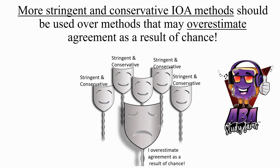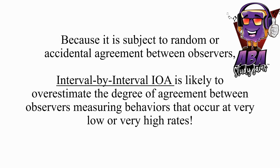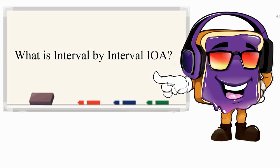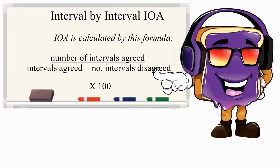Because it is subject to random or accidental agreement between observers, interval by interval IOA is likely to overestimate the degree of agreement between observers measuring behaviors that occur at very low or very high rates. According to Cooper, when using interval by interval IOA, the primary observer's record for each interval is matched to the secondary observer's record for the same interval. The formula is: number of intervals agreed, divided by (number of intervals agreed plus number of intervals disagreed), times 100, equals the interval by interval IOA percentage.